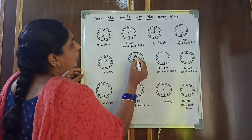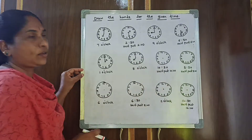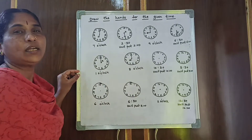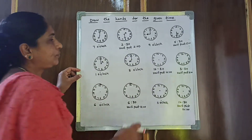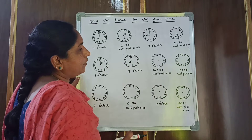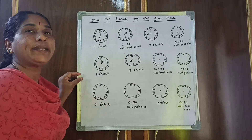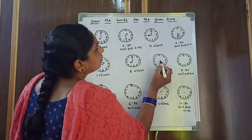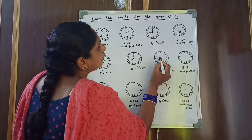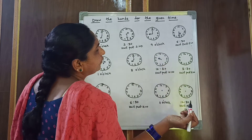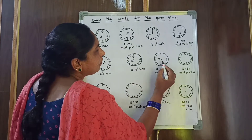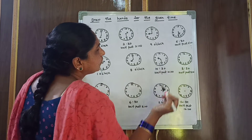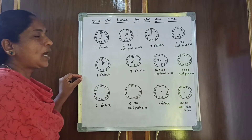Next one: 10:30, or half past 10. 10 is the hour hand and 30 is the minute hand. So draw the long hand to 6. This is 10:30 or half past 10.